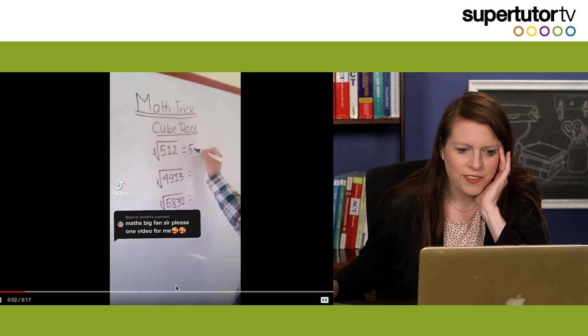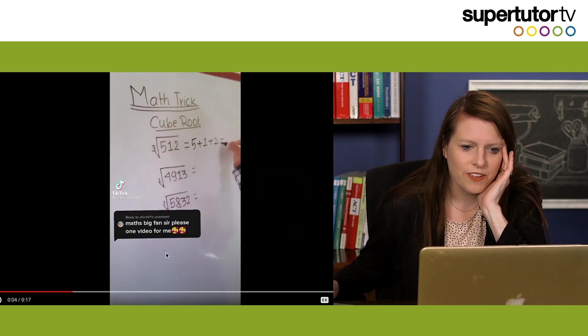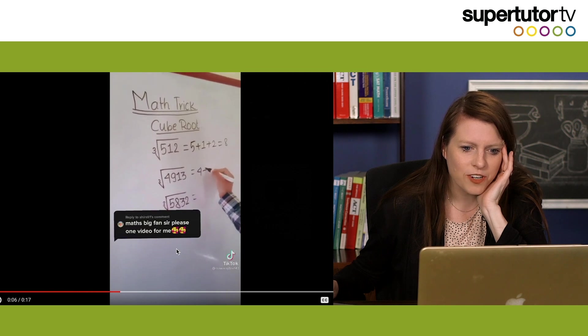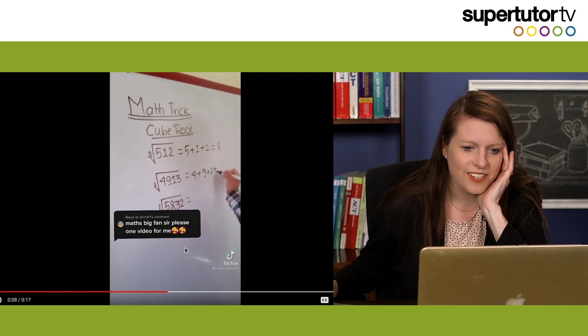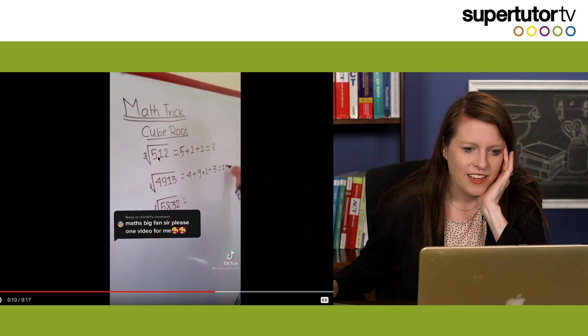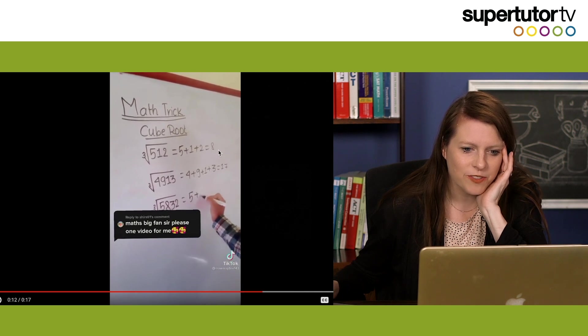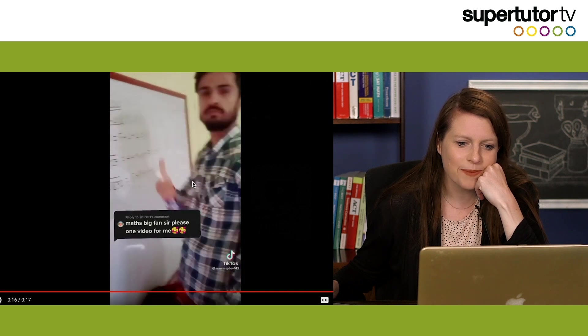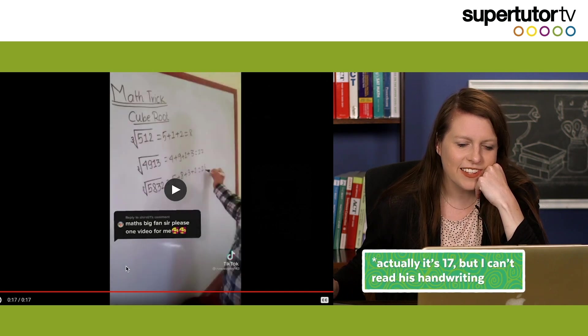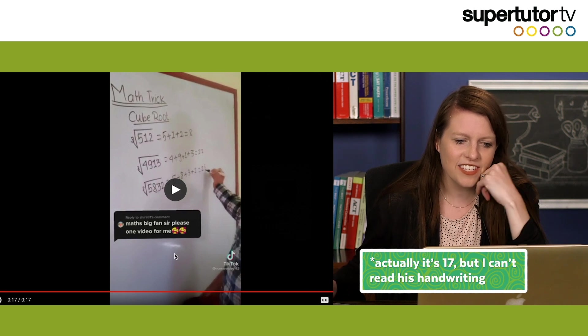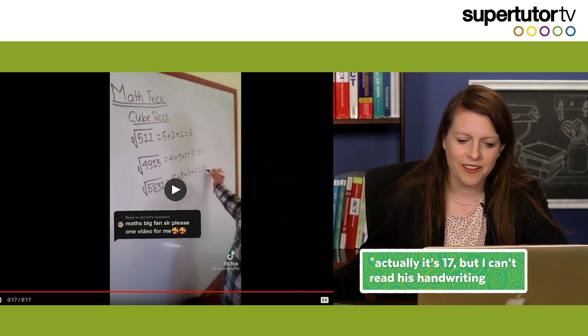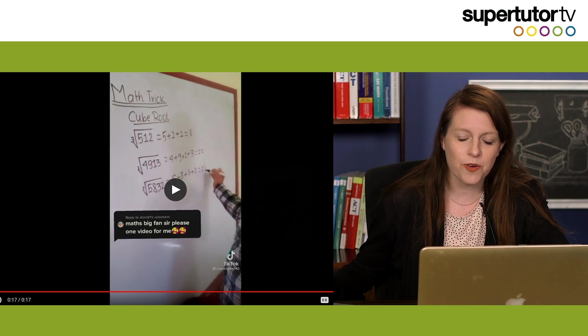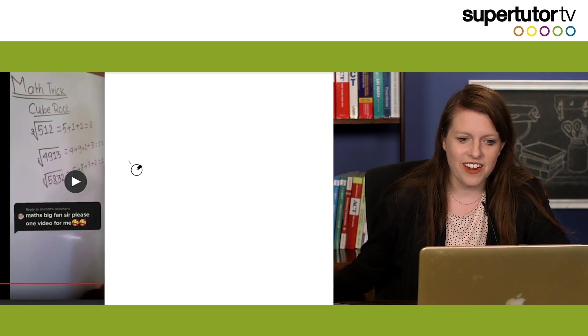But math's big fan, sir, please one video for me. Math trick cube root. Oh yeah, this one's really crappy. Okay, so we got the cube root of 512 is five plus one plus two, which is eight. The cube root of 4913 is four plus nine plus three equals 12. And this guy is like thumbs up. He is like in 17 seconds showing you cube root magic. And now I'm going to show you cube root train wreck. Are you ready?